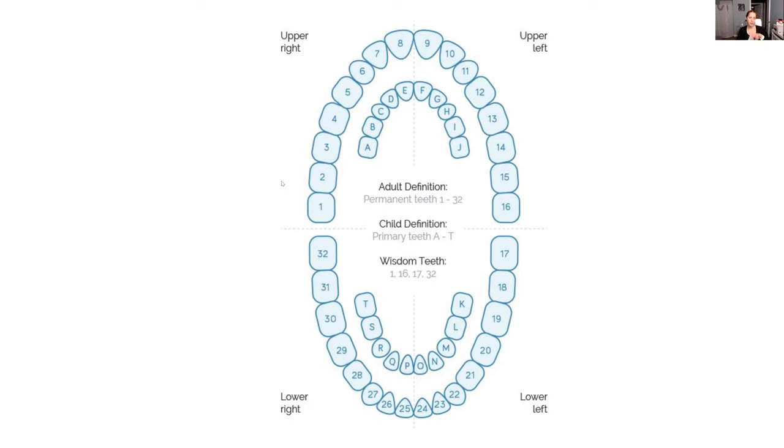So what you're seeing on the screen is the American system. First, I want to point out the teeth on the outside are the permanent teeth. The teeth on the inside are the primary teeth, so for children.